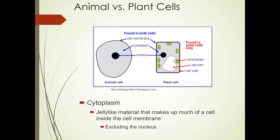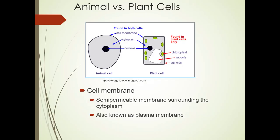Cytoplasm is the jelly-like material that makes up much of the cell inside the cell membrane, excluding the nucleus. The cell membrane is semi-permeable and surrounds the cytoplasm. It's also known as the plasma membrane.